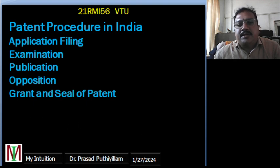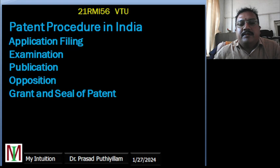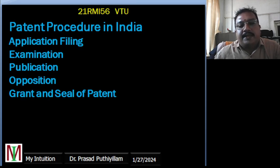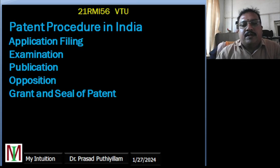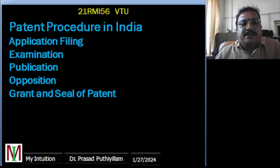So, patent procedures in India — that is application filing. Understanding the patent procedure in India includes the application filing, examination, publication, the examination, the publication of the claim, opposition if anything, then getting the grant, then paying the fee, then every year renewal of the fee payment. These are required to understand. Not going in detail in this session, just touching all of this, whatever is mentioned in the syllabus only.